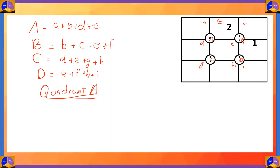Now let's look at quadrant A. It is written as a plus b plus d plus e. We know that b is equal to 2, so the other three cells — a plus d plus e — will be equal to 18, the sum of all the cells in the quadrant, minus 2, which is equal to 16.